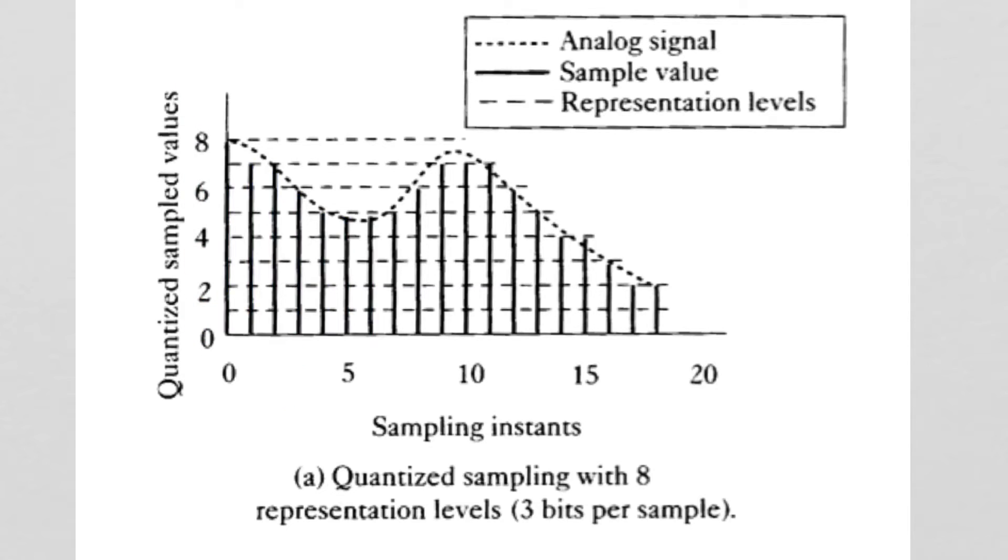So this process is called quantization, and the end result is that we do not have infinite precision in knowing exactly how high or low the amplitude is when we sample at some particular time point. But instead, we're dividing it up into some sort of discrete number of levels.